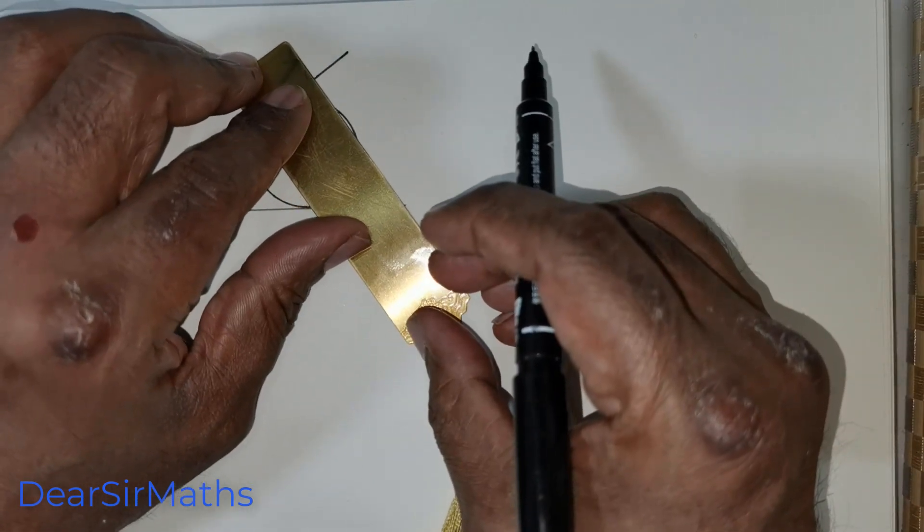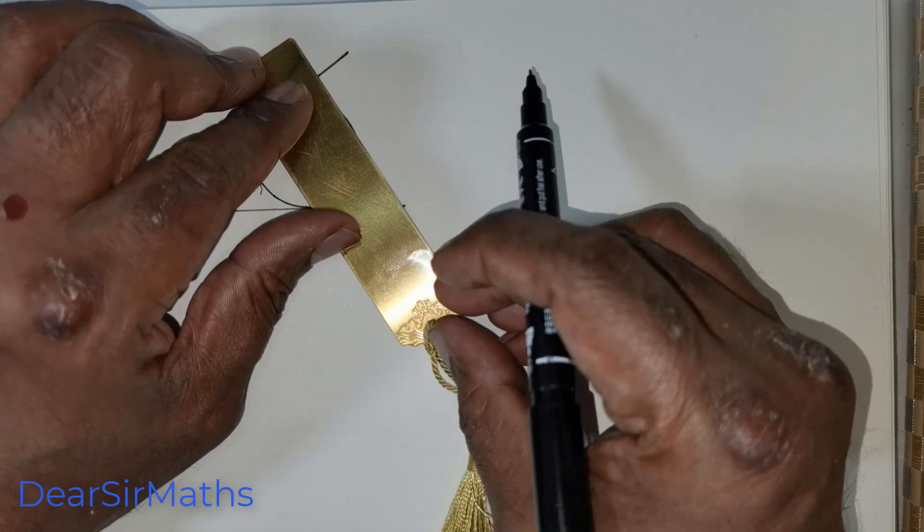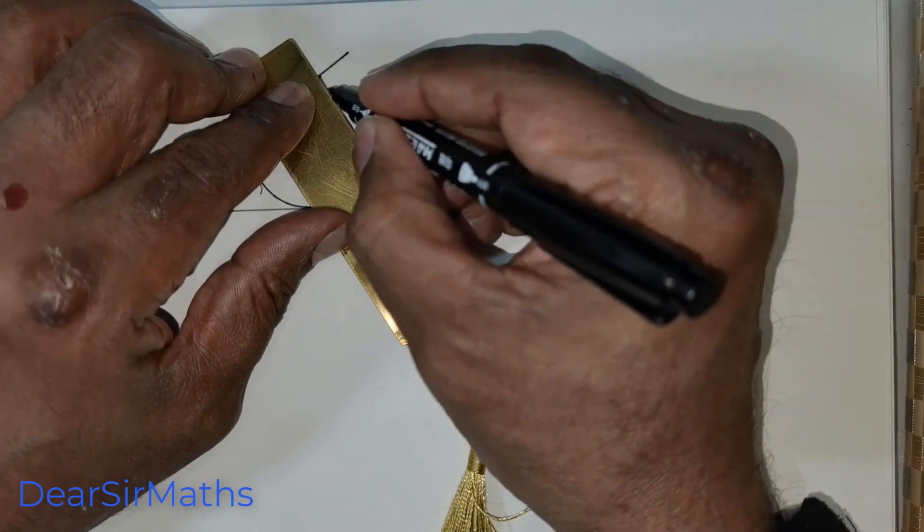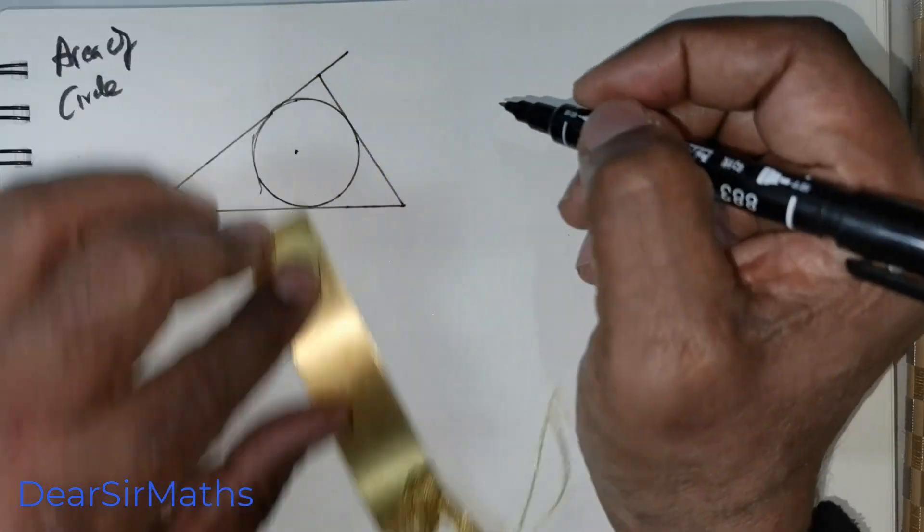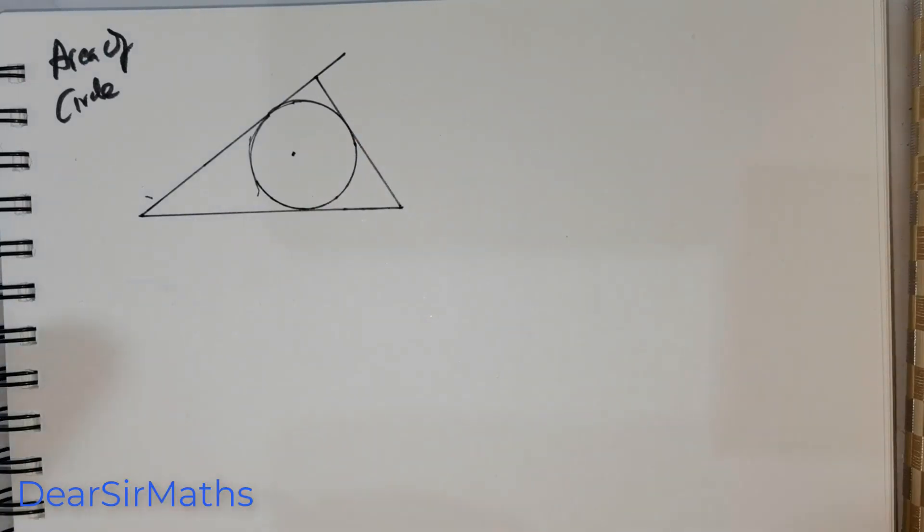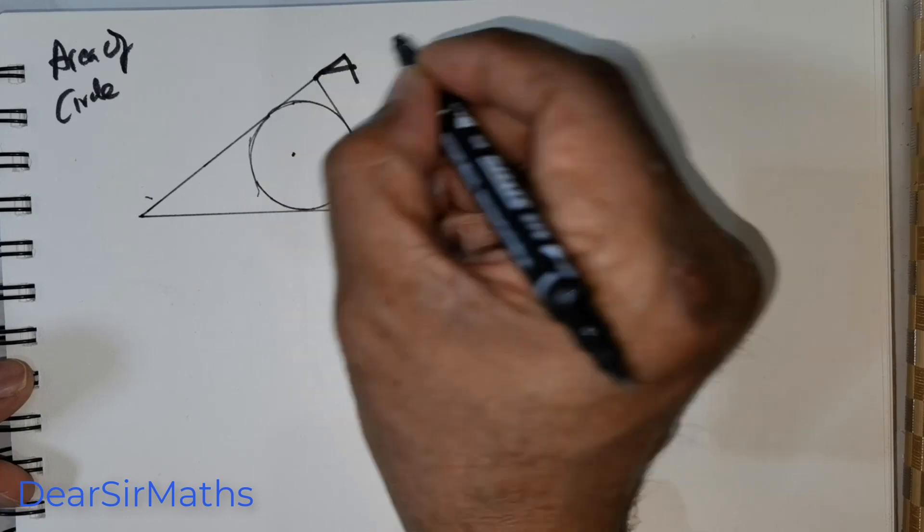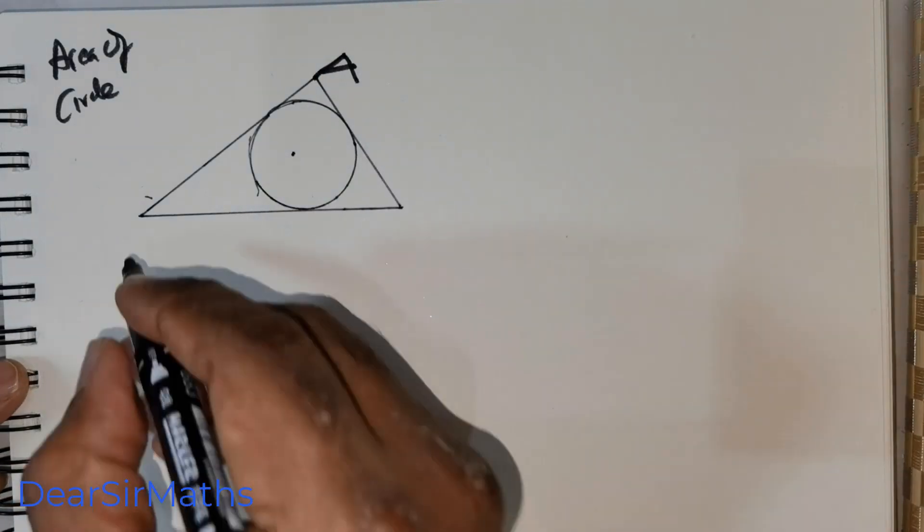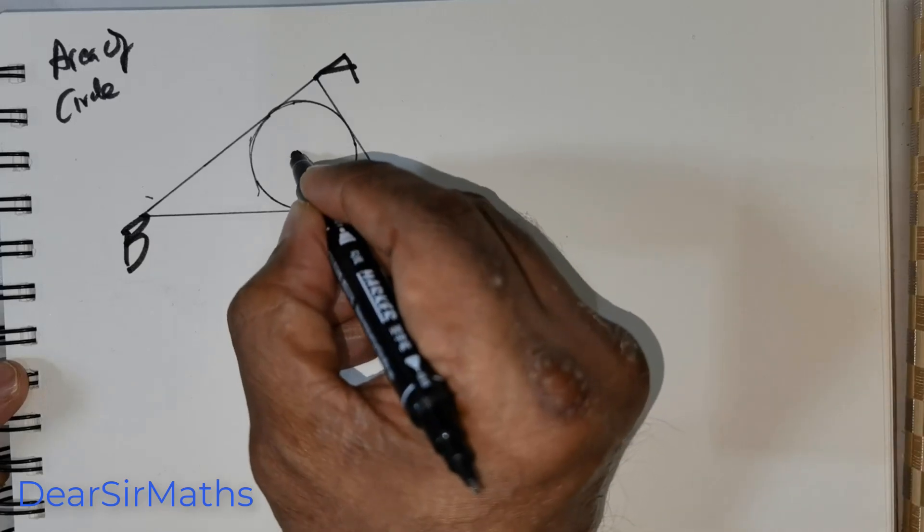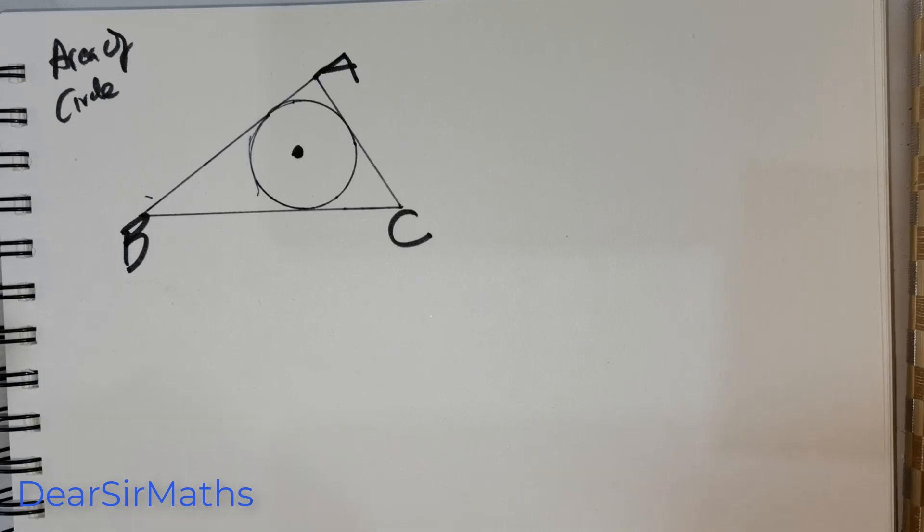Okay, apparently I have just gone a little bit overboard, but I will try to manage that. Okay, so we got a circle inscribed. Let me name it. I just want to name that as A and B and C. So, this is the circle inside the triangle.